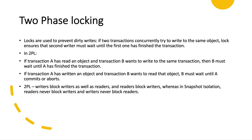Now let's see what two-phase locking is. In the previous section we saw how locks prevent dirty writes — if two transactions concurrently try to write to the same object, the lock ensures the second writer must wait until the first finishes. Two-phase locking is similar but makes the lock requirements much stronger. Several transactions are allowed to concurrently read the same object as long as nobody is writing to it, but as soon as anyone wants to write, exclusive access is required.